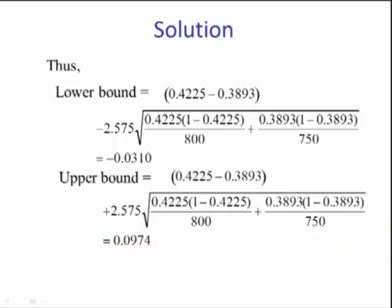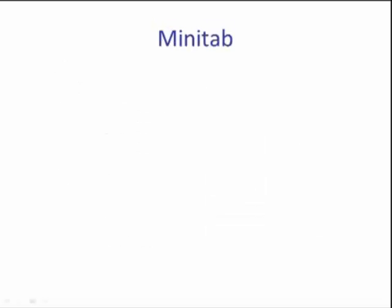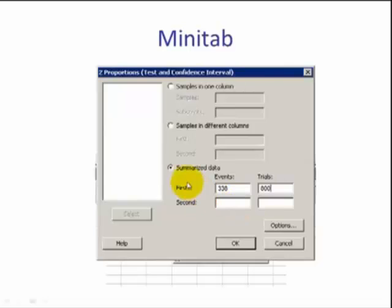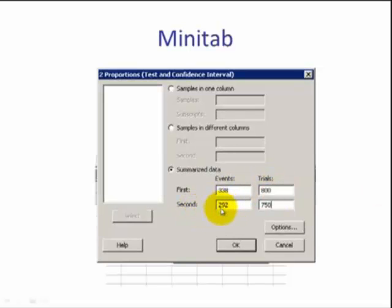Now let's see how we do this in Minitab and StatCrunch. In Minitab we go to basic statistics, two sample proportions. We have summarized data so we select it and we put our x1 here, our n1 here, x2 goes here, n2 goes here.